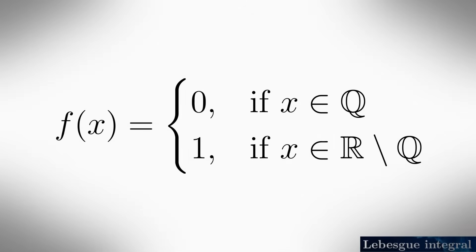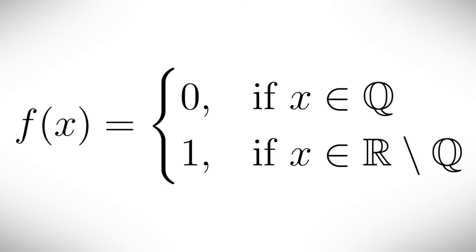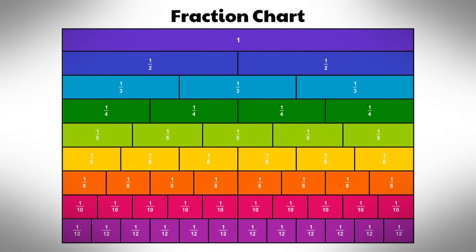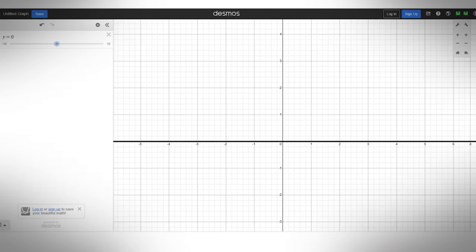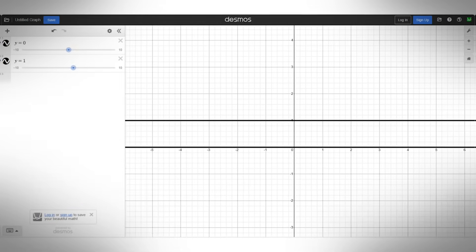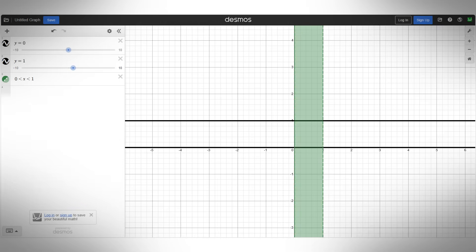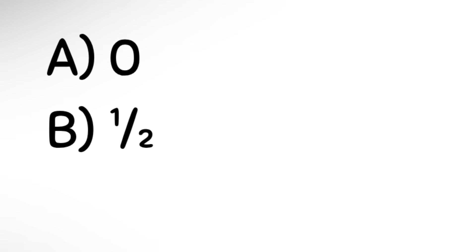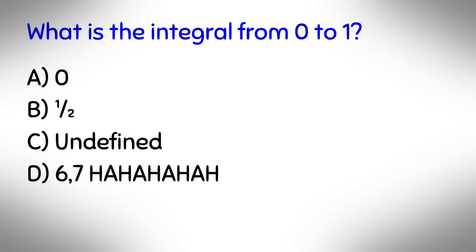Take for example the function f of x which is 0 when x is rational and 1 when x is irrational. Now there are infinitely many values where x is rational, so the y equals 0 line should be filled in. And there are also infinitely many values where x is irrational, so y equals 1 should also be filled in. So what is the integral from 0 to 1? Is it a: 0, b: 1/2, c: undefined, or d: 6/7?